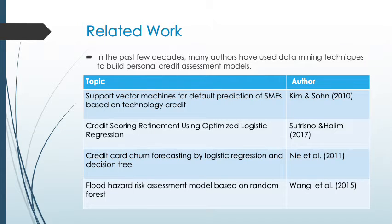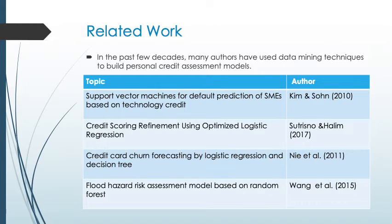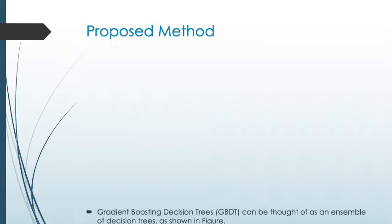In the past few decades, many scholars have used data mining techniques to build personal credit assessment models. The algorithms mainly include support vector machine, logistic regression, decision tree, neural network, random forest, and gradient boosting decision tree. In 2010, Kim and Sohan wrote a paper on support vector machine for default prediction of SMEs. In 2017, a paper on credit scoring refinement using optimized logistic regression was published. In 2011, Nii et al. gave credit card default forecasting by logistic regression and decision tree. In 2015, Wang et al. gave a food hazard risk assessment model based on random forest.